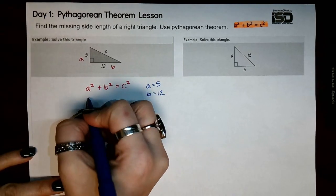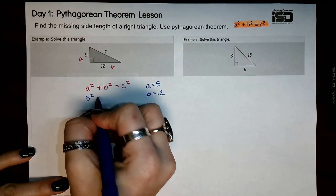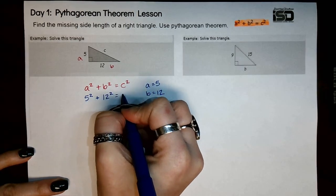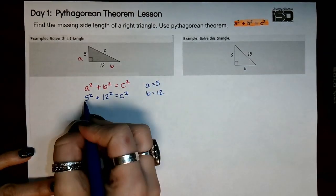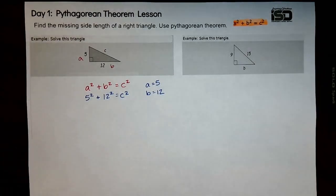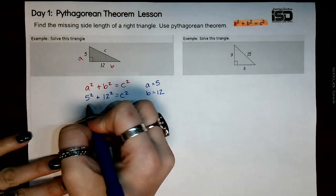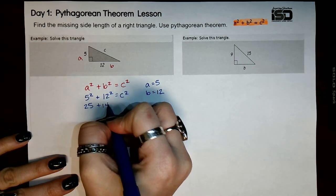So a equals 5, so I would have 5 squared. B equals 12, 12 squared. Now from here, you're going to actually square these numbers. So 5 squared is 25. 12 squared is 144.